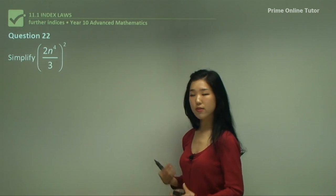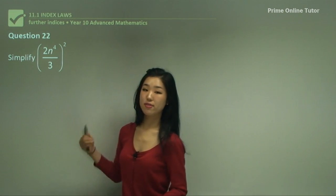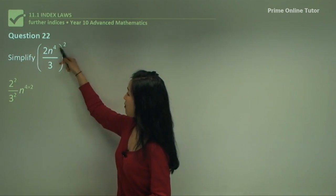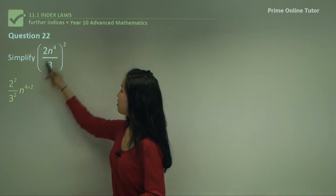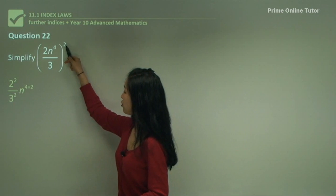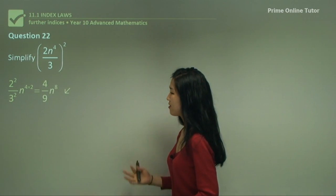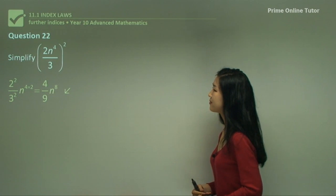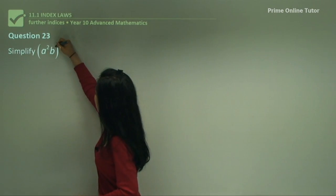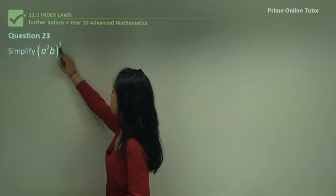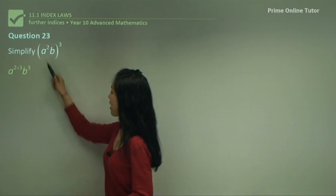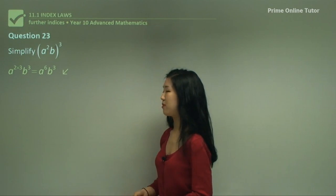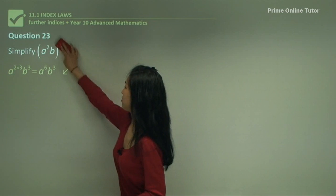Question twenty-two. I've got a fraction but we're still doing the same thing — power 2 to every single term inside the brackets. So we have 2 squared and 3 squared, and then n to the power of 4 times 2. Simplifying: 2 squared is 4, 3 squared is 9, and 4 times 2 is 8, giving 4n to the power of 8 over 9. Question twenty-three: power of 3 to every term inside the bracket. If there's nothing written it's power of 1. So a to the power of 2 times 3, and b to the power of 1 times 3, which is just 3. Simplify to get the answer.